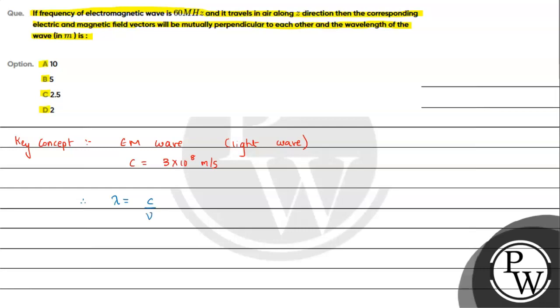So from here we can substitute the value: c, 3 into 10 raised to 8, divided by nu given as 60 megahertz, that is 60 into 10 raised to 6.